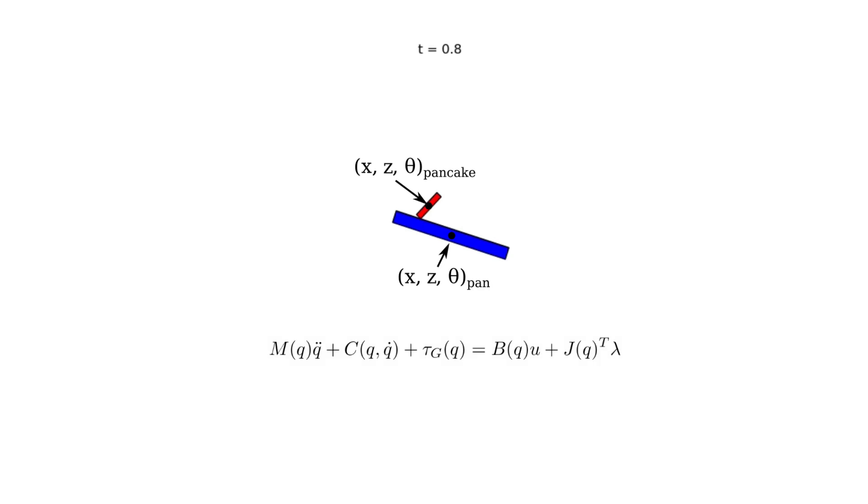These dynamics include both the standard terms for control affine rigid body dynamics, along with an additional term that models the contact interaction between the pan and the pancake.